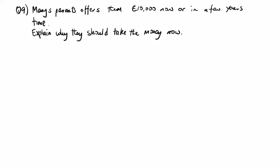Question 9: Mary's parents offer them £10,000 now or in a few years time. Explain why they should take the money now. Well, we know based on interest, I think it's always nice when you're asked to explain something to show some math.